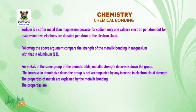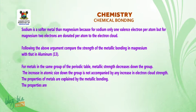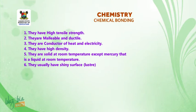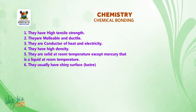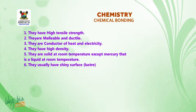The properties of metals are explained by metallic bonding. The properties of metals are as follows: they have high tensile strength; they are malleable and ductile; they are conductors of heat and electricity; they have high density; they are solid at room temperature, except for mercury which is liquid at room temperature; and they usually have a shiny surface — that is, luster.